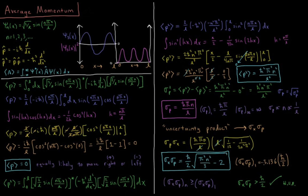Because n squared is in the numerator, the uncertainty product for any given n is greater than or equal to the value for n = 1, which is already greater than h-bar over 2. The Heisenberg uncertainty principle requires the uncertainty product to be greater than or equal to h-bar over 2 — and we've just numerically confirmed that quantum mechanics agrees with this. This is the first time we've calculated a result explicitly testing whether our rigorous quantum mechanical model, with wave functions from the Schrödinger equation, satisfies the Heisenberg uncertainty principle.